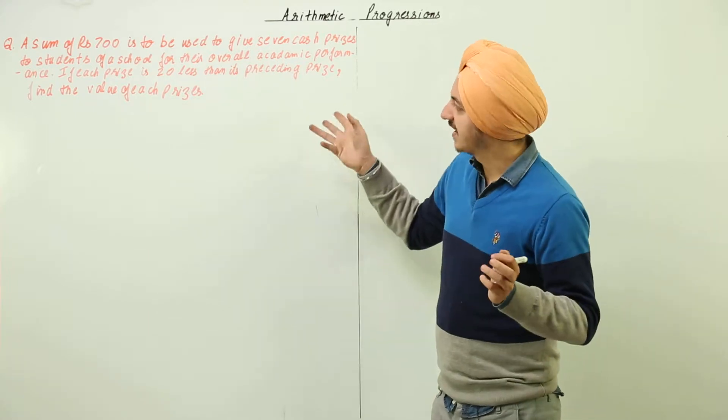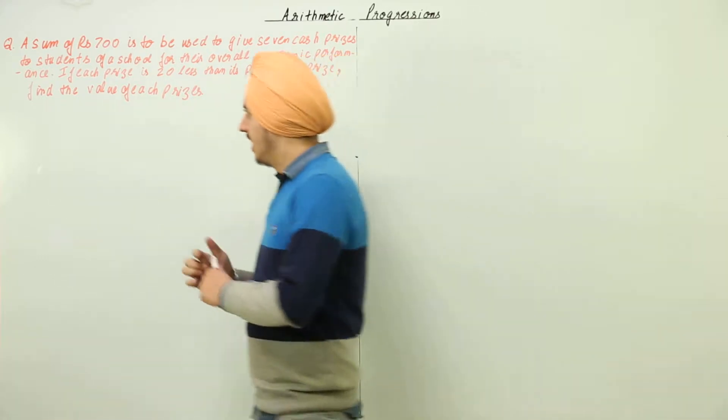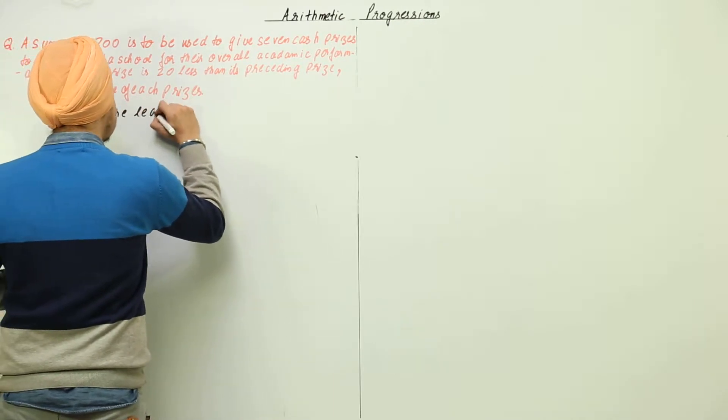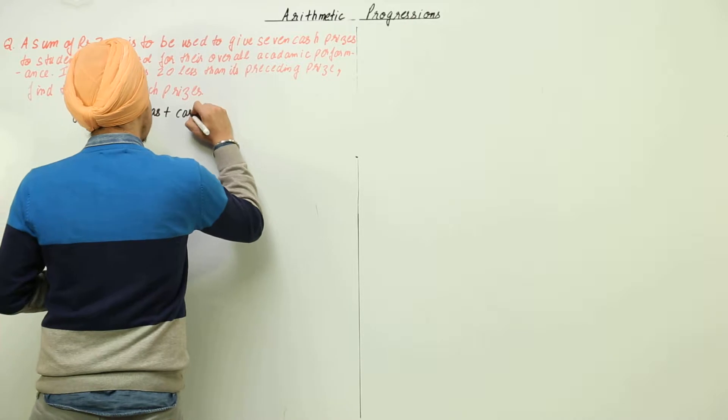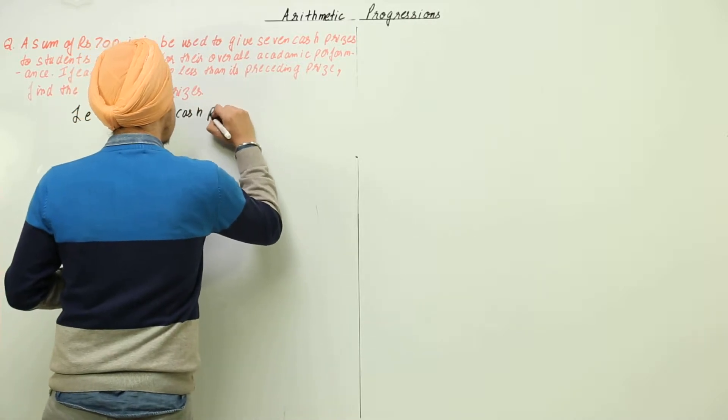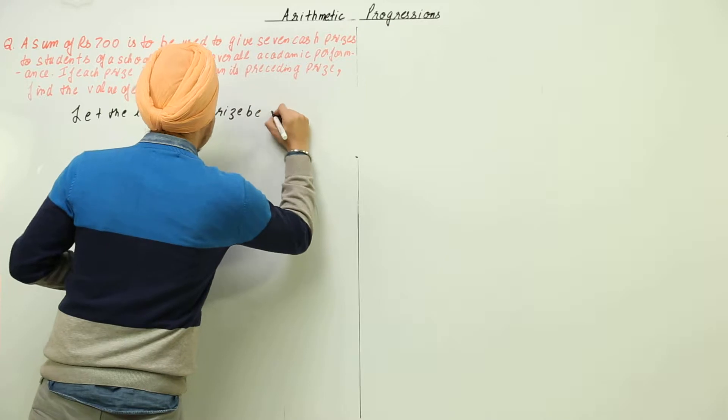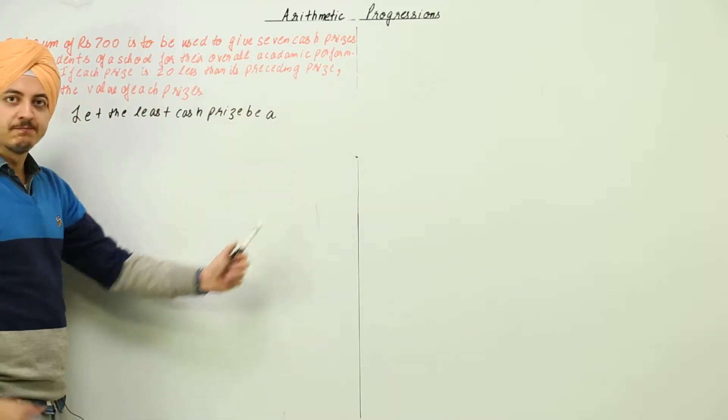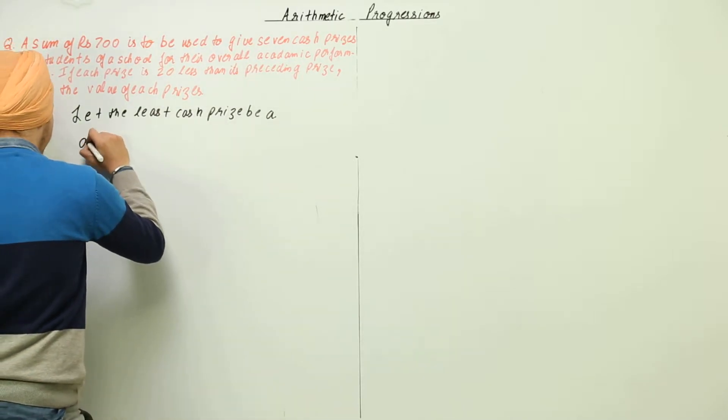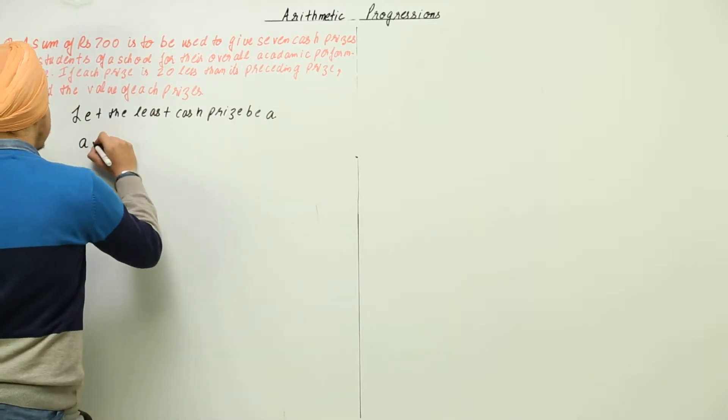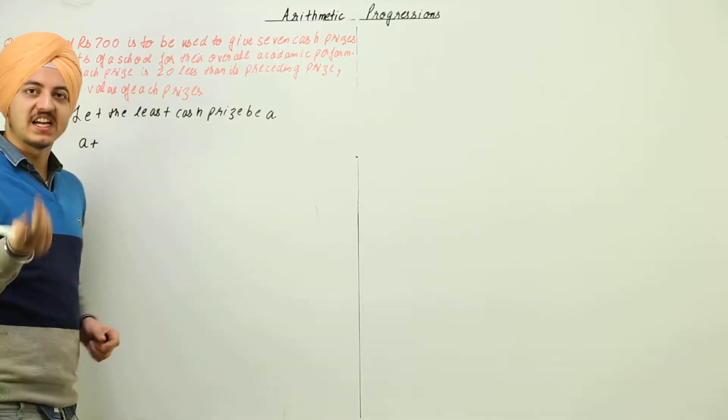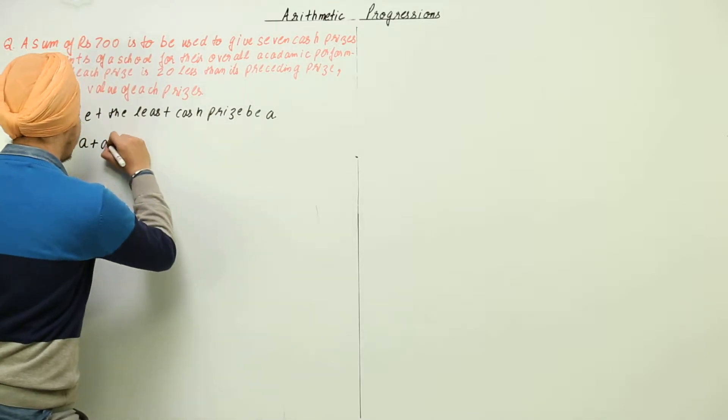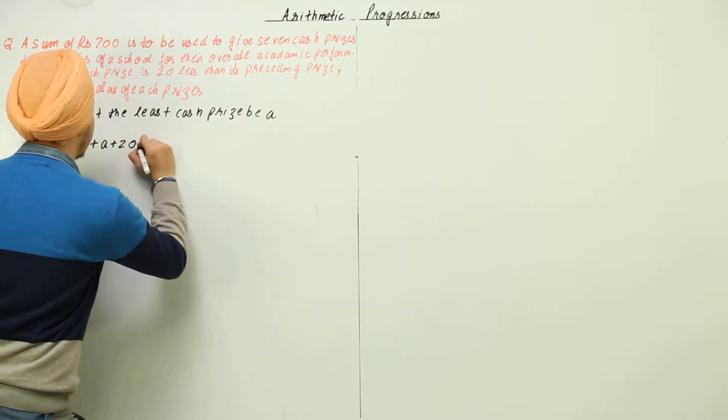Now if we write this question the other way around, if we let the least cash price be a - we've let the least cash price be a, so the first term is going to be a. The next cash price would be 20 more than a. Now this is just a way I am trying to explain the question to you.